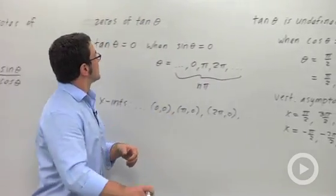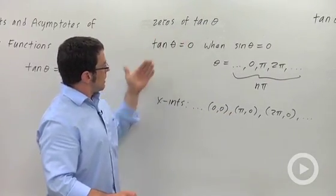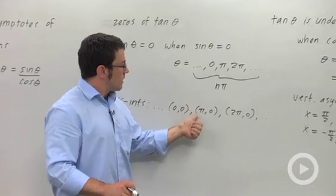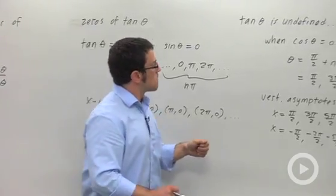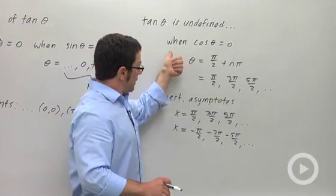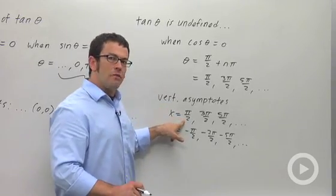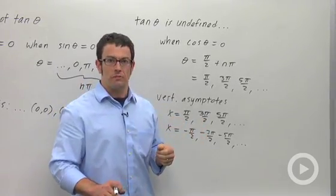So, once again, the zeros of tangent and the x-intercepts, integer multiples of pi. Tangent is undefined. Vertical asymptotes, these are pi over 2 plus integer multiples of pi.